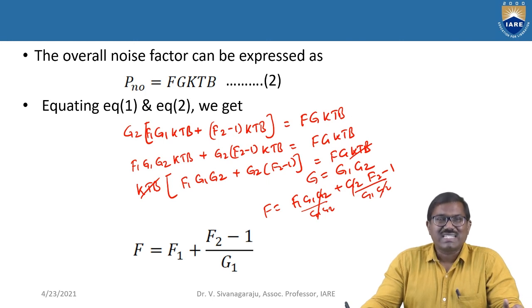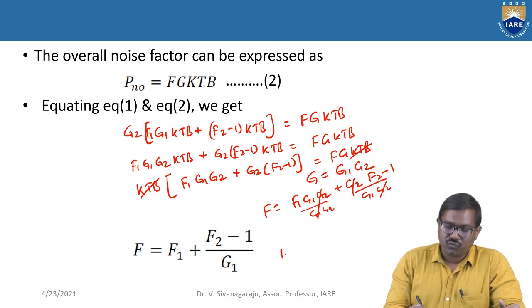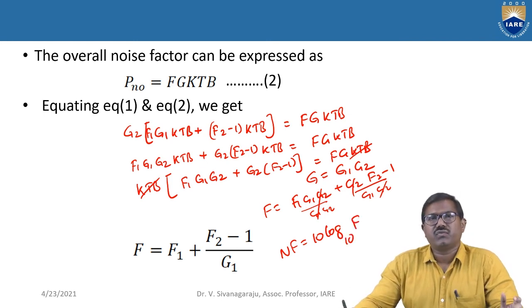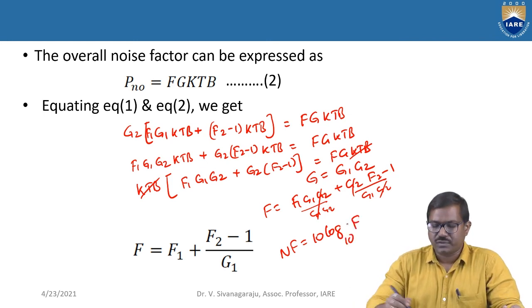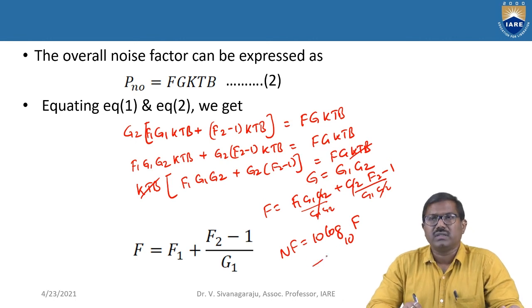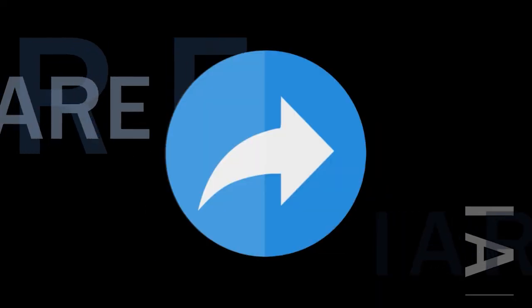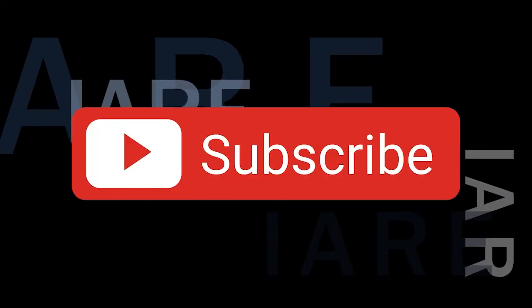This is the noise factor for cascaded amplifiers. The noise figure is then NF = 10 log₁₀(F). By substituting the noise factor F into this expression, you can calculate the noise figure. Like, share, and subscribe — hit the bell icon for more updates.